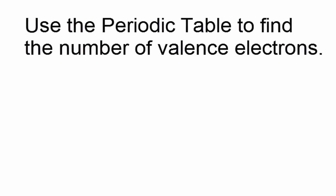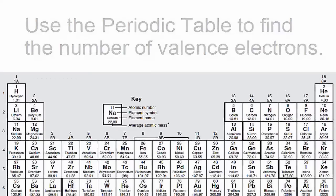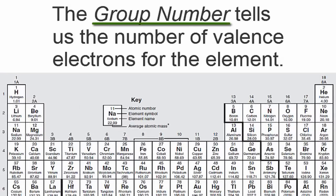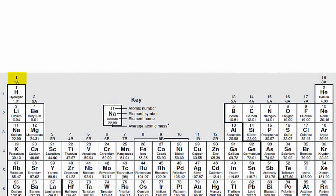We can find the number of valence electrons using the periodic table. The group number tells us the number of valence electrons for the element. For example, hydrogen has one valence electron because it's in group 1, sometimes called 1A.